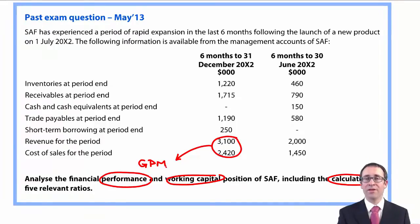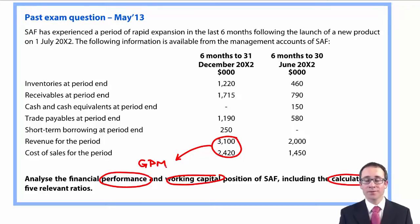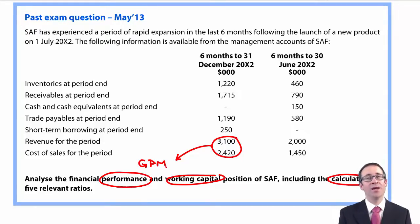Do it for the left-hand column and the right-hand column. For working capital, you're thinking about inventory days, receivable days, and payable days.